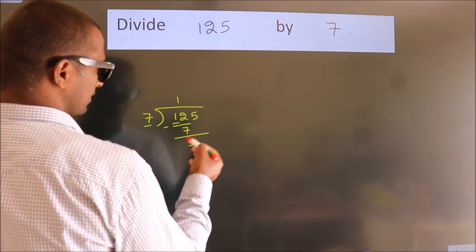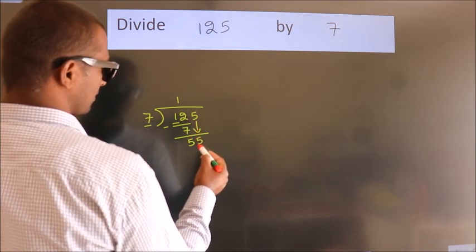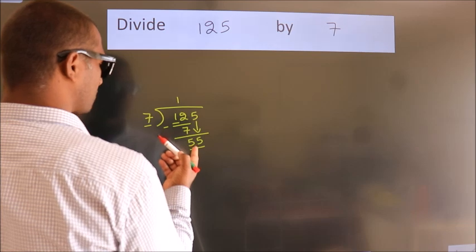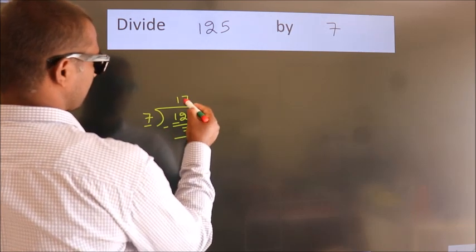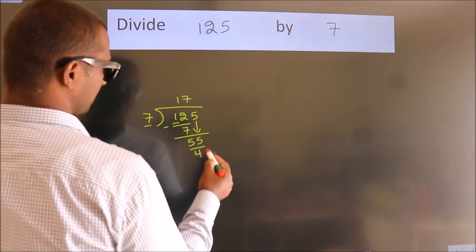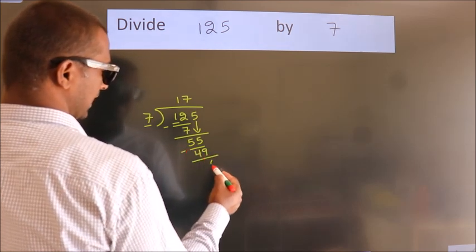After this, bring down the beside number. 5 down, so 55. A number close to 55 in the 7 table is 7 sevens, 49. Now we subtract. We get 6.